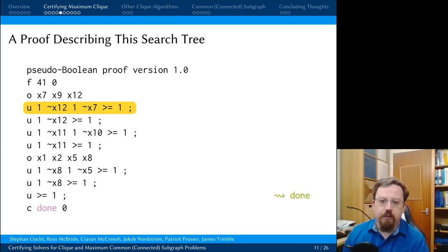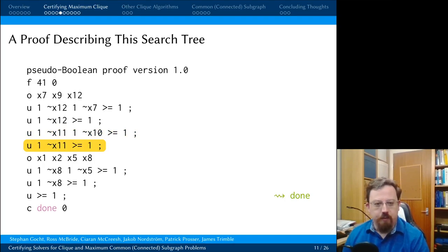Then we have a series of U lines. We have one of these U lines for every single backtrack that is carried out in our search tree. The way we read this backtrack is not x12 plus not x7 is greater than or equal to 1. So we're saying I'm asserting that either x7 is false or x12 is false. Then subsequently I'm saying, OK, now I'm asserting that x12 is false. Then, OK, I'm asserting that x11 and x10 are false, so I'm deeper in the search tree again. I backtrack a bit further and observe that x11 is false.